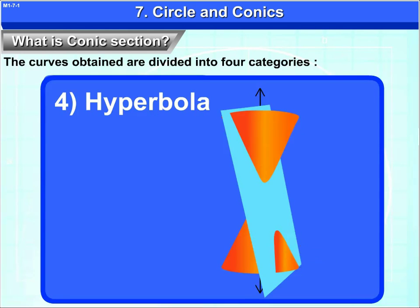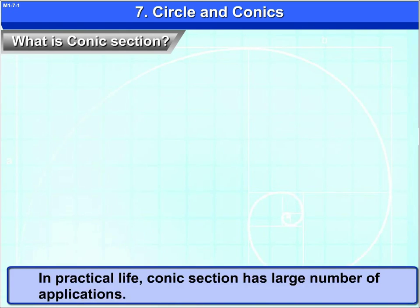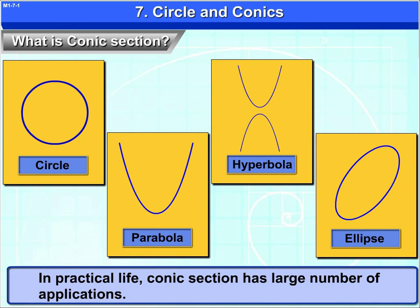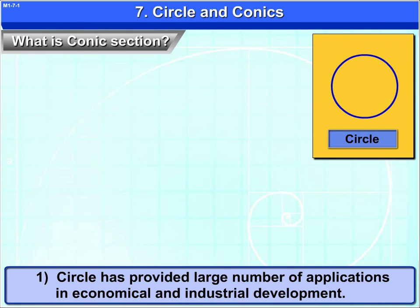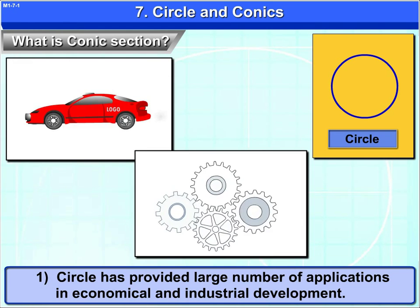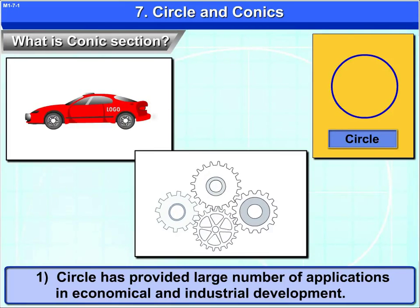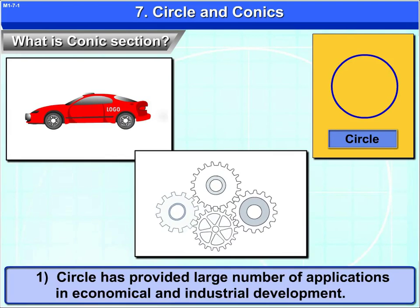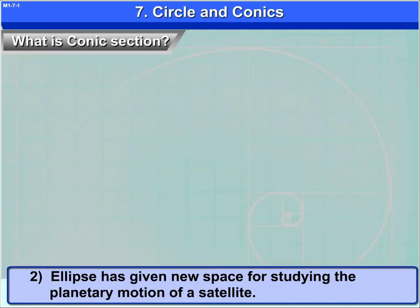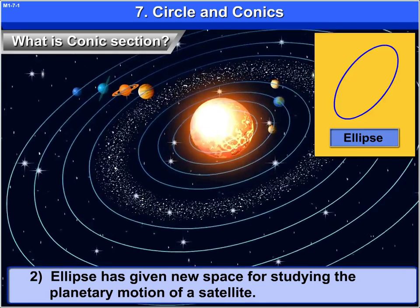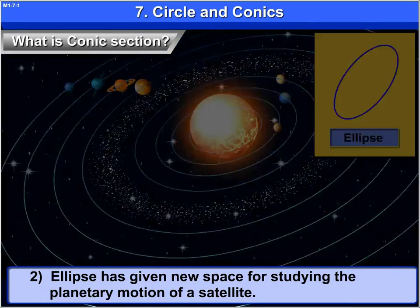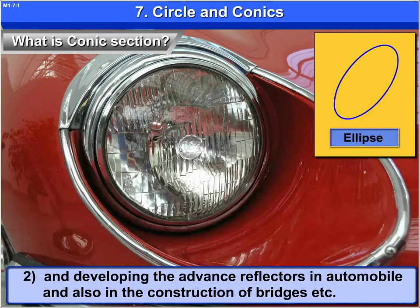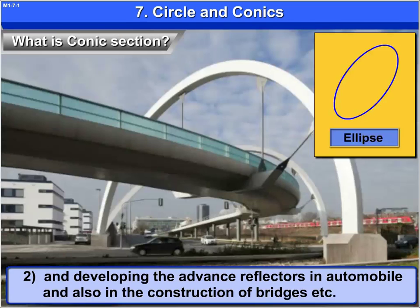Friends, in practical life, conic sections have a large number of applications. 1. Circle has provided a large number of applications in economical and industrial development. 2. Ellipse has given new space for studying the planetary motion of a satellite, and developing advanced reflectors in automobiles, and also in the construction of bridges, etc.